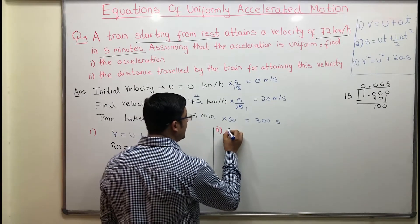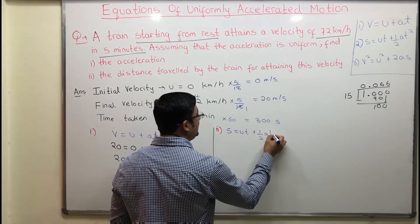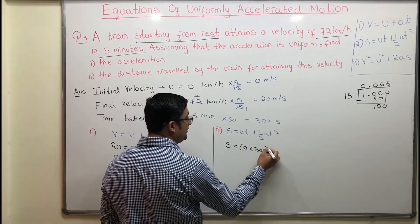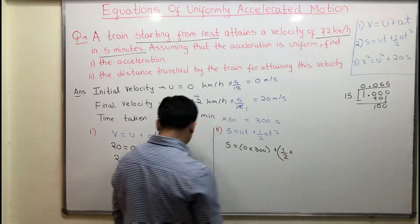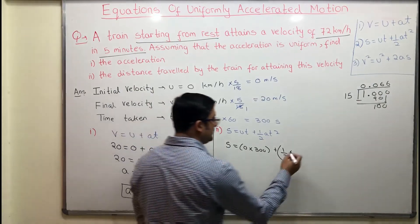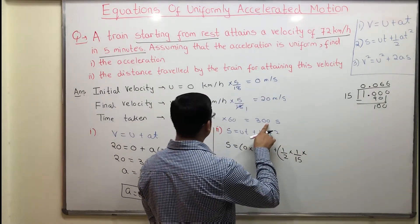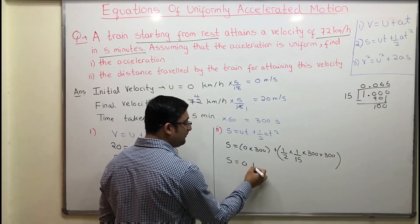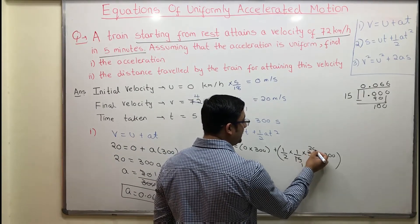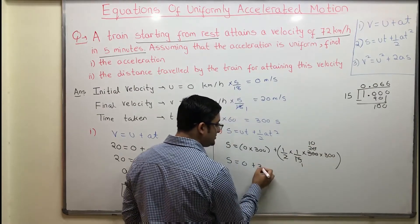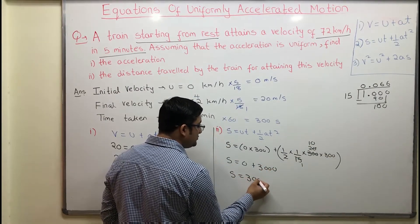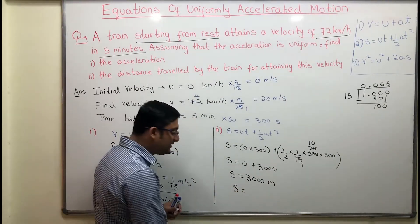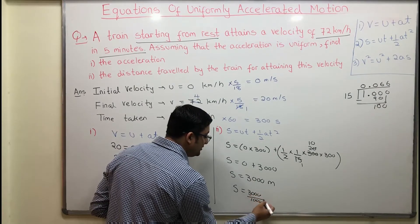Using equation 2: s is equal to ut plus half at squared. Substituting: u is 0, so the first term is 0. Then half into 1/15 into 300 squared. Simplifying: 300 divided by 15 is 20, divided by 2 is 10, into 300 gives 3000. So s is equal to 3000 meters. Converting to kilometers by dividing by 1000, the distance traveled is 3 kilometers.